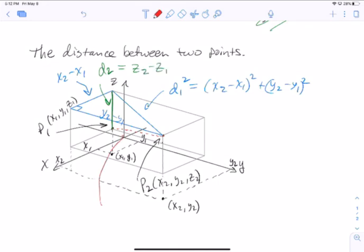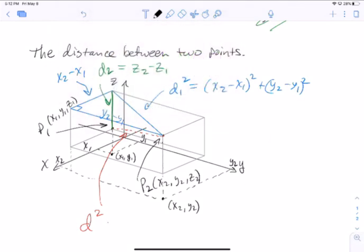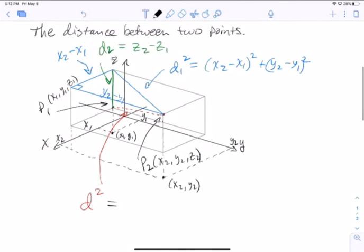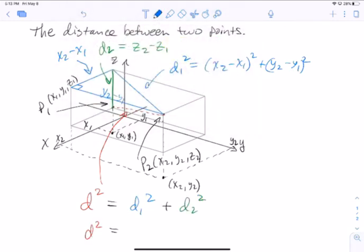Now this diagonal distance that we're after, I'm going to call it d. And we know by the Pythagorean theorem with this new triangle, that d squared is going to be d1 squared plus d2 squared. Making some replacements, we have that d squared is x2 minus x1, the quantity squared plus y2 minus y1, the quantity squared plus z2 minus z1, the quantity squared. And that gives rise to our distance formula.